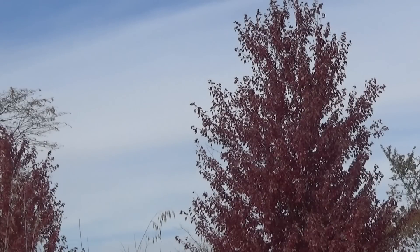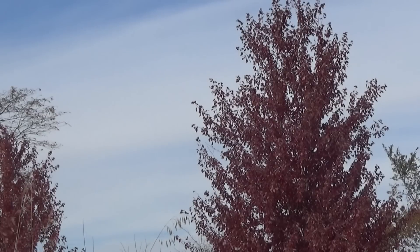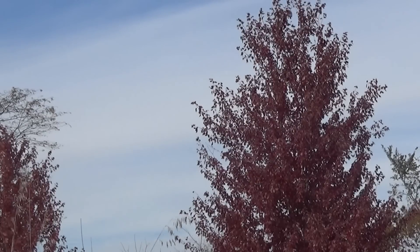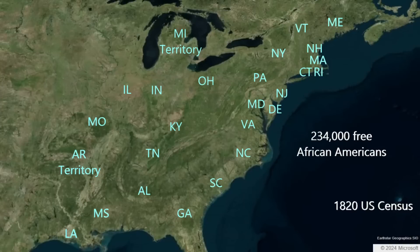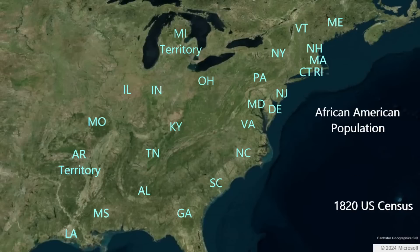The 1820 census tabulated free citizens and slaves in order to determine congressional representation for each state, so we know how many slaves were in each state in 1820. 1.8 million people, or nearly one in five residents, were African American in 1820. Of these, 1.5 million were slaves — about 16% of the total United States population. 234,000 African Americans were freemen, or about 13% of the African American population was free in 1820.